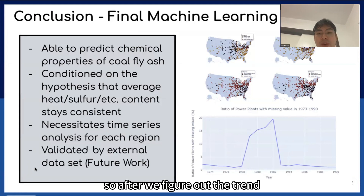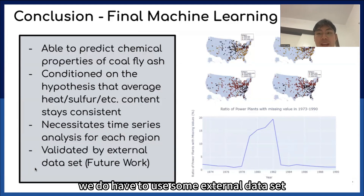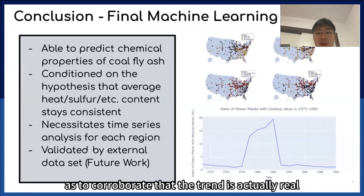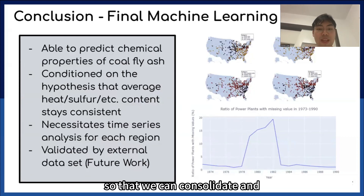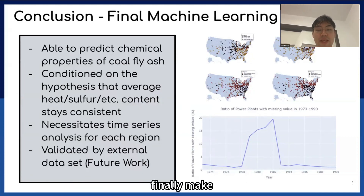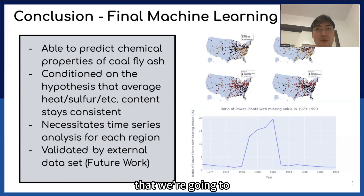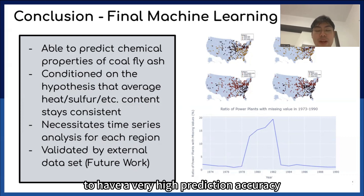After we figure out the trend, we have to use some external dataset to validate the trend that we find, just as a sanity check and to corroborate that the trend is actually real. That way we can consolidate and finally build our machine learning or deep learning model with very high prediction accuracy.